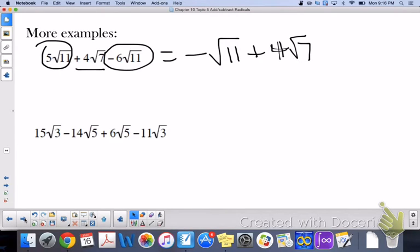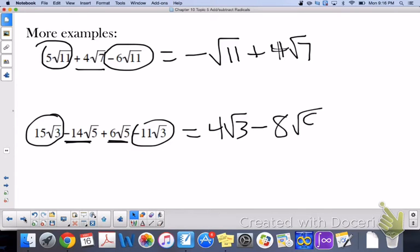The next one, find your like terms. 15 root 3 can combine with minus 11 root 3. 15 minus 11 is 4 root 3, and then we have negative 14 root 5 plus 6 root 5. Negative 14 plus 6 is negative 8 root 5. Just like with variables, it's the same thing.